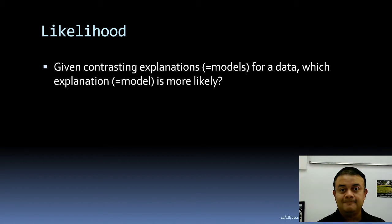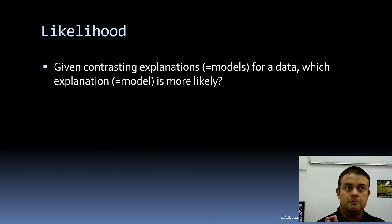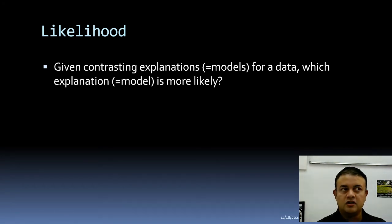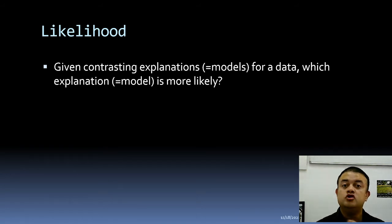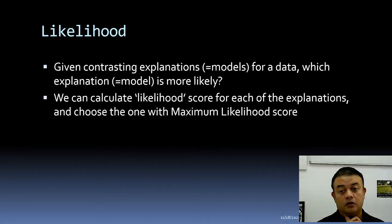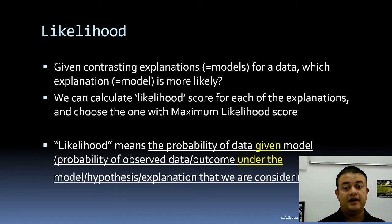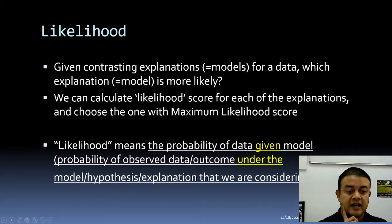For example, consider an aircraft disaster. Explanation one: the aircraft was hit by a lightning strike. Explanation two: the weather pattern changed and it flew into a storm. Explanation three: there was terrorism inside the aircraft. Explanation four: it was shot down by a missile attack. We have many explanations — to choose among them, we calculate the likelihood score for each and choose the one with maximum likelihood.